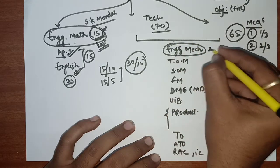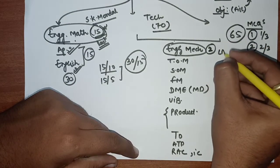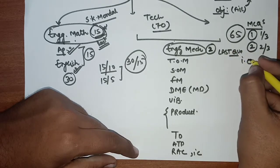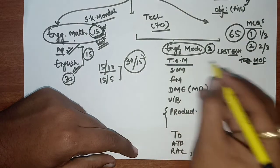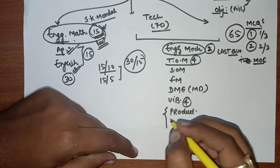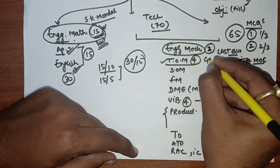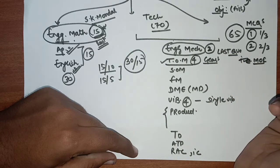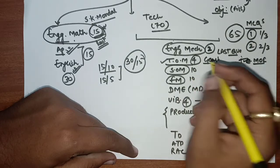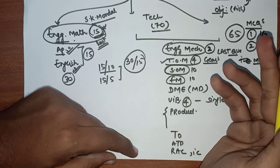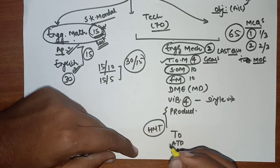Engineering Mechanics is asked for about 2 marks — mostly truss questions. Theory of Machines carries 4 marks, and Vibration carries about 8 marks total — focus on single degree of freedom vibration. For Theory of Machines: gear trains, basic spur gear, helical gear, balancing, and governors. Strength of Material and Fluid Mechanics are each 10 marks. Strength of Material is simpler, but Fluid Mechanics and HMT (Heat and Mass Transfer) have the toughest questions.